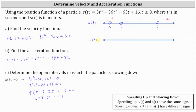Now let's determine where the acceleration function equals zero. If a of t equals zero, then 18 t minus 72 equals zero. Solving for t: add 72 to both sides and divide by 18, giving t equals four. We go to the second number line and plot four as an open point. Testing t equals zero: a of zero is 18 times zero minus 72, which is negative. Testing t equals five: a of five is 18 times five minus 72, which is positive. We also plot zero as an open point.